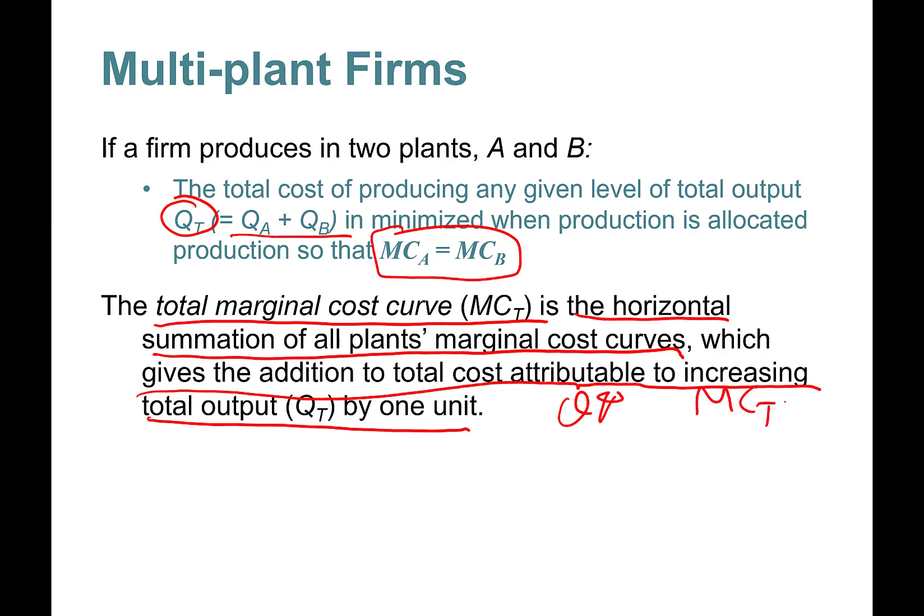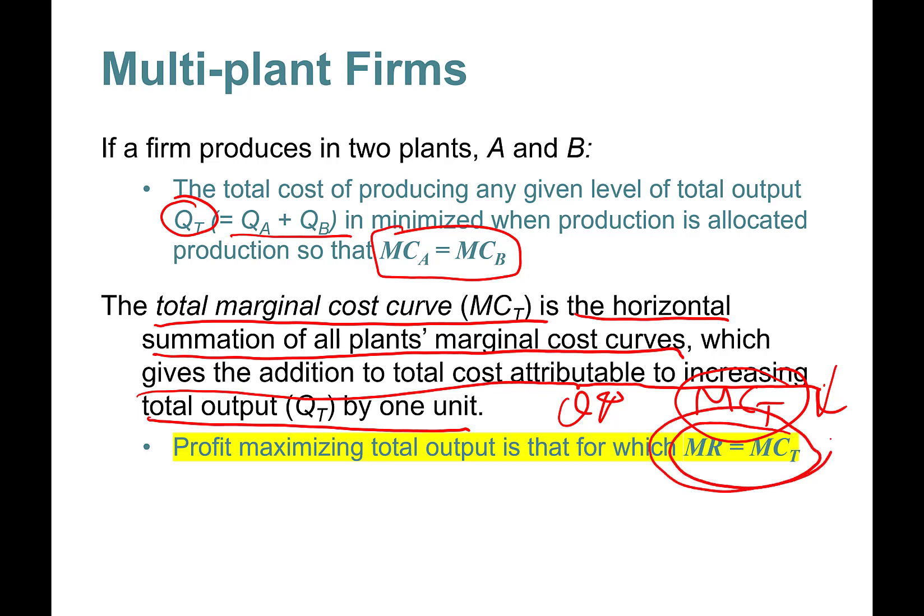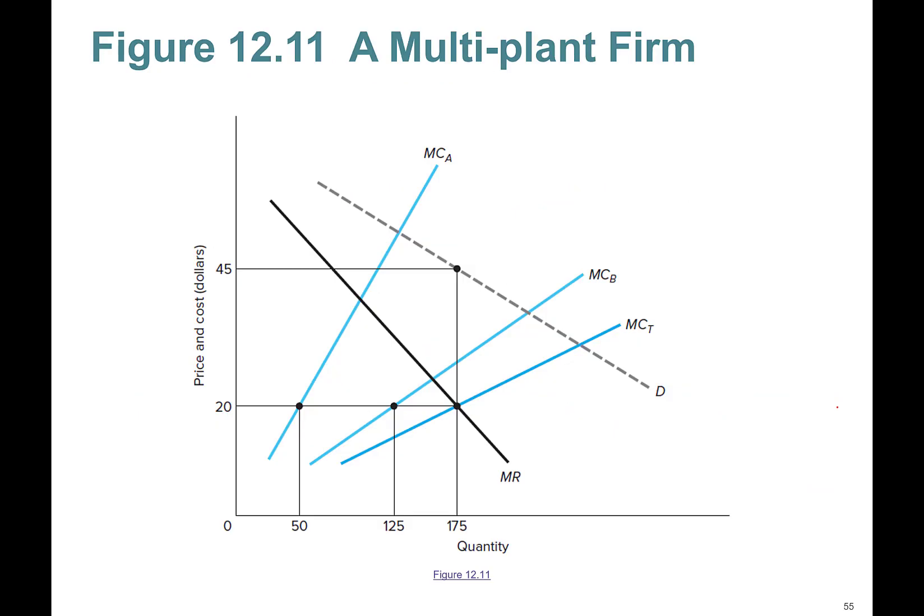Profit maximizing total output is that for which marginal revenue equals marginal cost, but not just marginal cost in one plant but the total marginal cost in all units added horizontally. Here's an example.